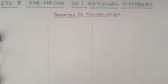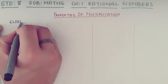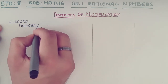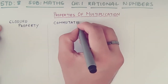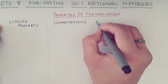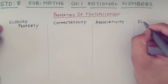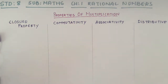Hello students, in this video we are going to study about rational numbers, and specifically properties of multiplication. We have: closure property, commutativity, associativity, and distributive property — and there are two more that I'll be explaining as well.